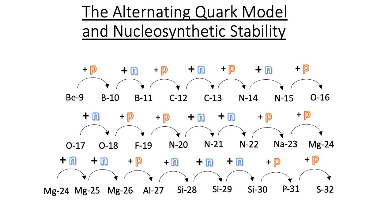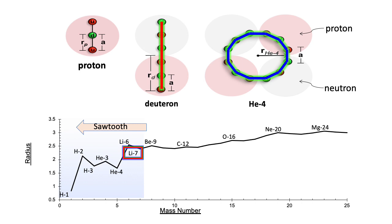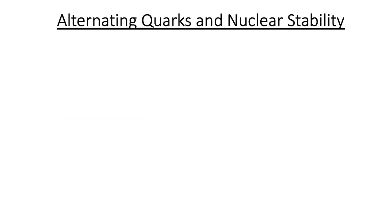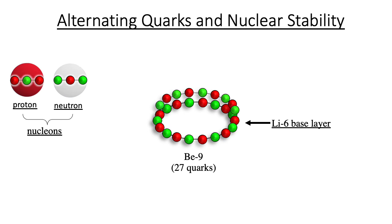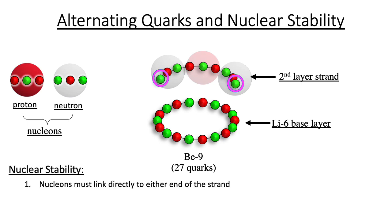Whether a proton or a neutron will produce the next stable nuclide is a mystery — the alternating quark model predicts this incremental pattern. Nuclear stability is achieved when a nucleon added to an existing nuclide preserves the alternating quark sequence. Starting with beryllium-9, the first 18 quarks comprise the lithium-6 base layer. The nine quarks of the parallel strand comprise protons sandwiched between two neutrons. According to the model, the next type of nucleon added must connect directly to either end of the parallel strand to continue the alternating quark sequence.